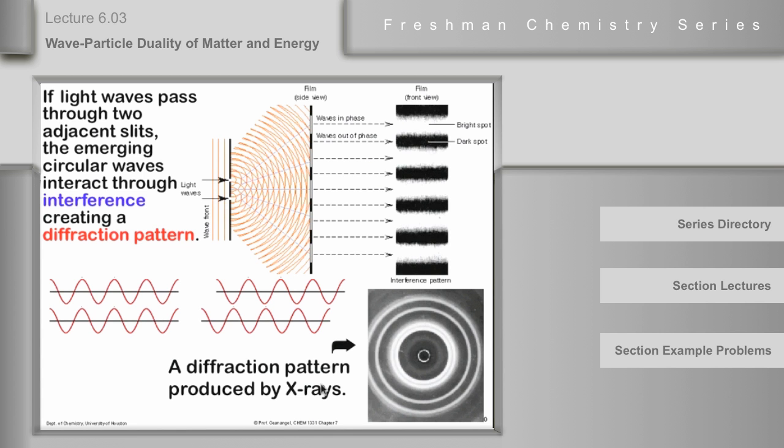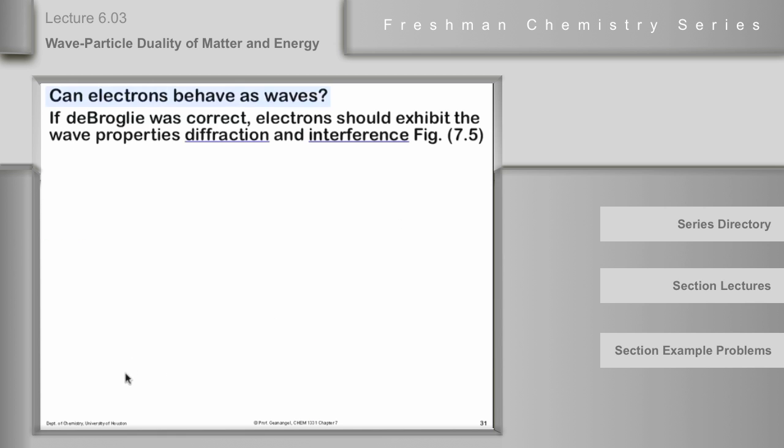So, the question is, does the electron wave produce a diffraction pattern? If it's a real wave, if electrons can behave as waves, and de Broglie was right, they should exhibit the interference possibility and diffraction.